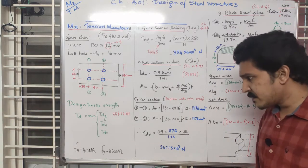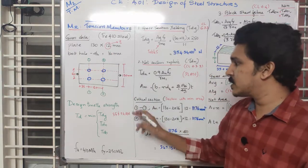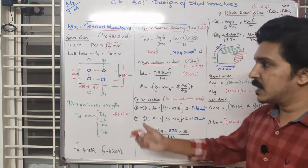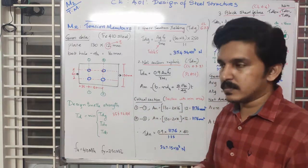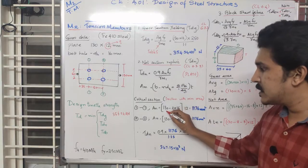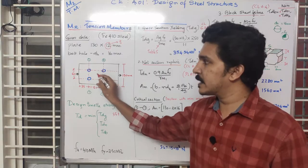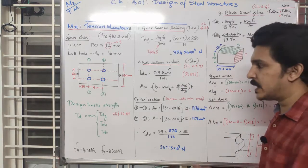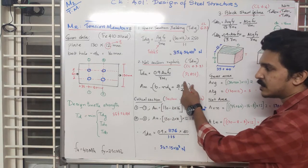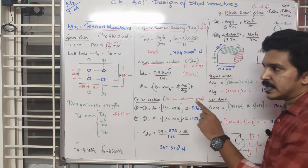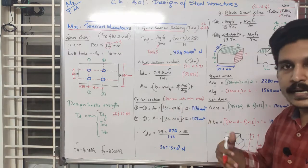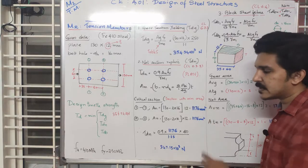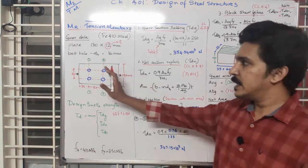The net area calculation gives 1476 mm². Since both sections 1-1 and 2-2 have the same number of bolts and the geometry is symmetric, both sections have the same net area. There is no diagonal stagger to consider. Both sections are equally critical.